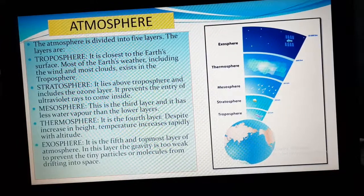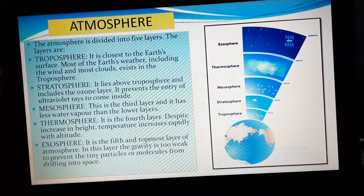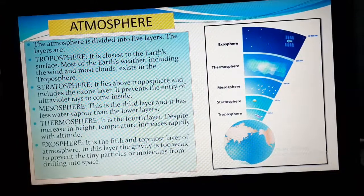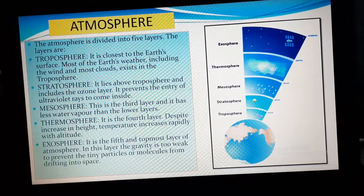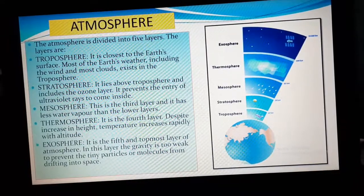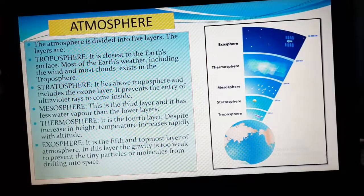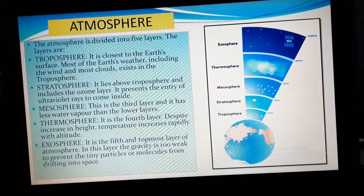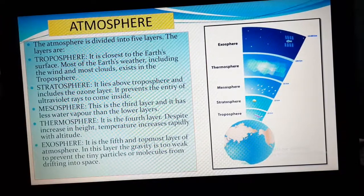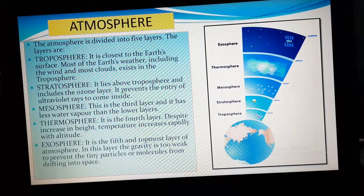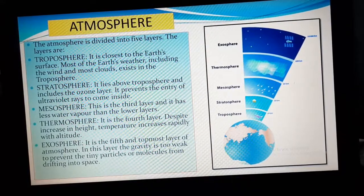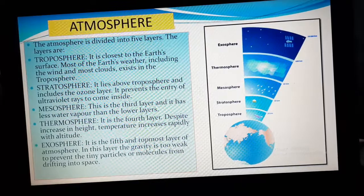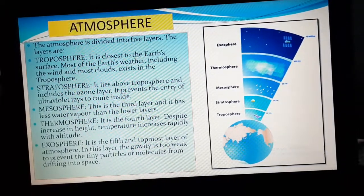Please learn the spellings also — don't make mistakes in the spelling. Troposphere is the layer of atmosphere which is closest to the earth. Here we can see clouds. Most of the earth's weather, including wind and clouds, exists in the troposphere.